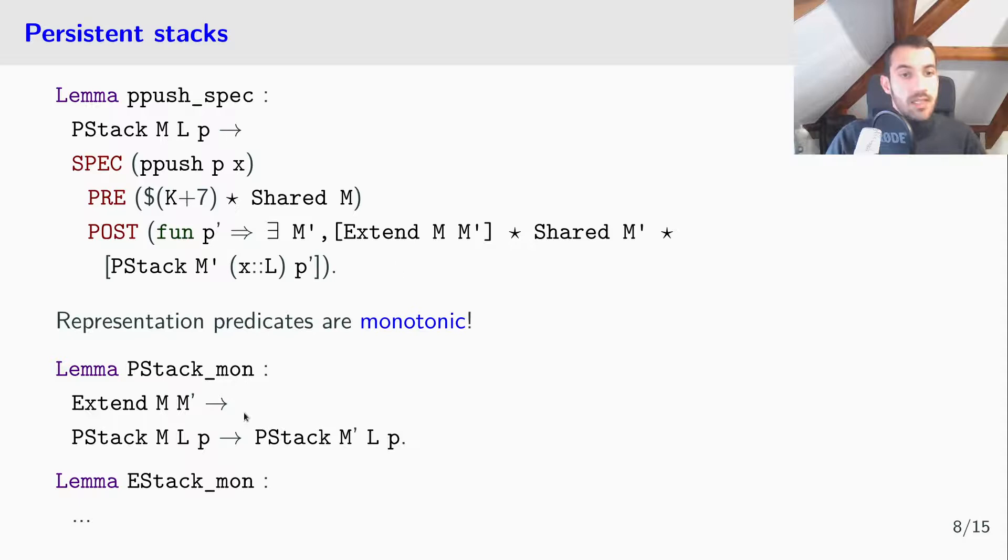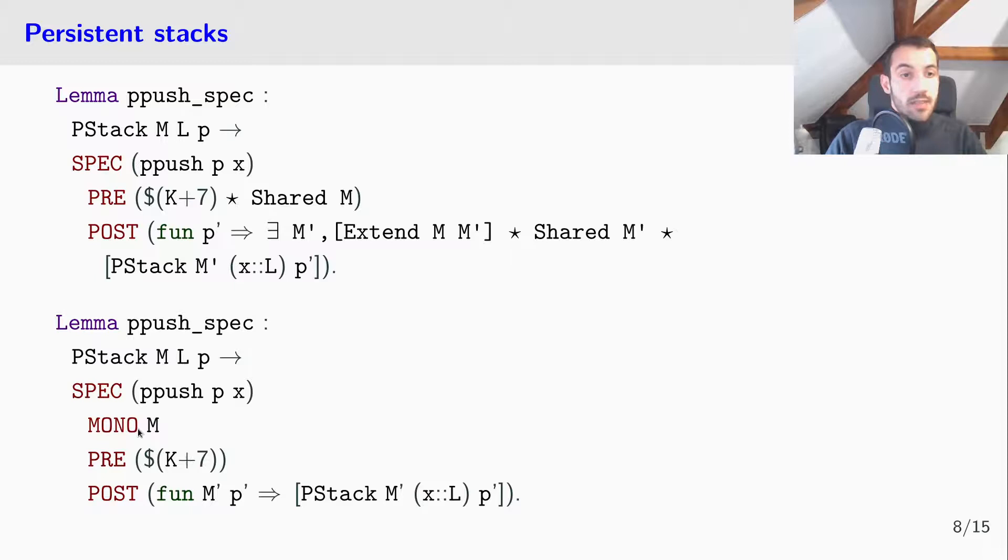Indeed, all representation predicates are monotonic with respect to extend. So, if I know that a p-stack represents a stack in some memory m, and if I know that m-prime extends m, then p still represents the same stack in the extended memory m-prime. And because almost all operations are monotonic, we introduced a new CFML notation, mono here. So, we specify p-push as monotonic in m, which is just syntax sugar for this big specification.